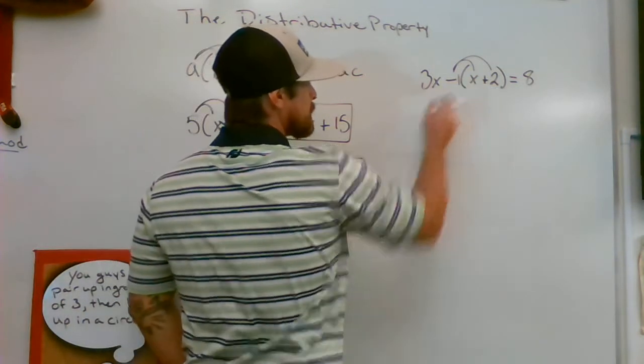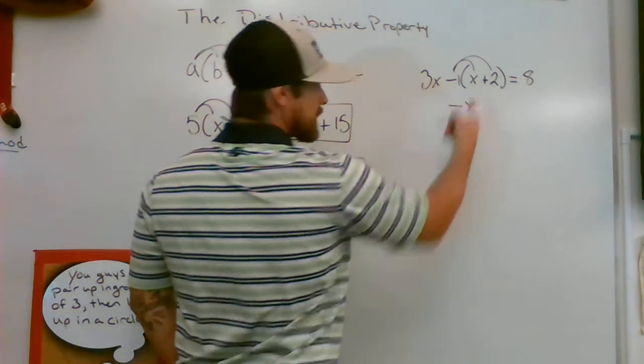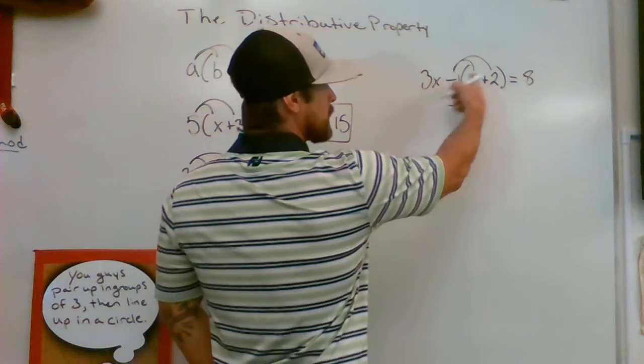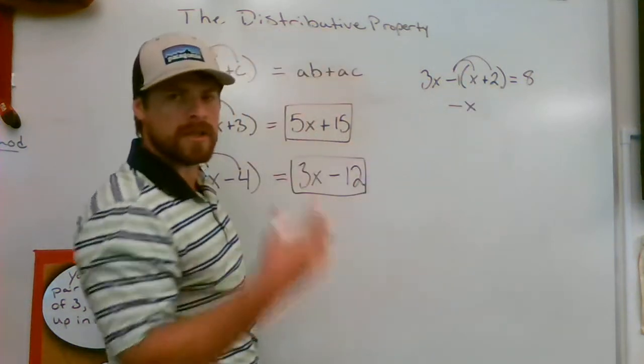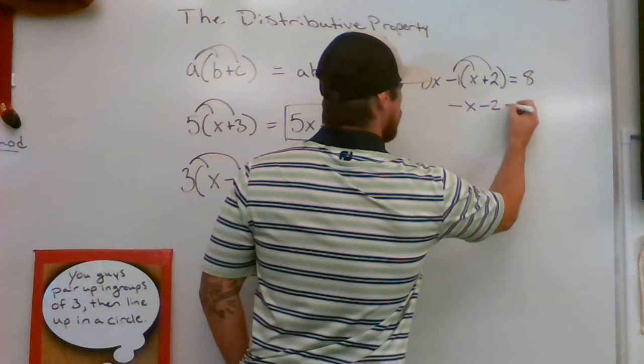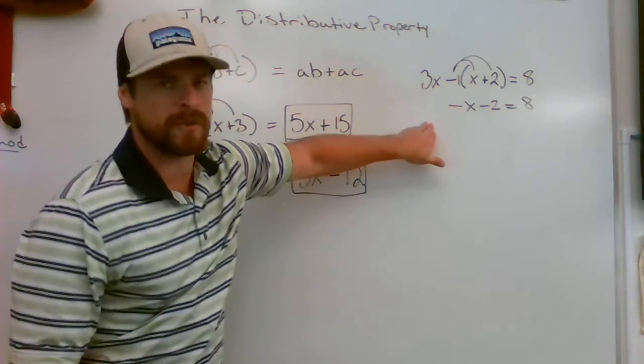So if I take negative 1 times x, I'm going to get a negative x as opposed to a positive x as you see on the inside. Okay, if I take a negative 1 times a positive 2, all it does is it turns that positive 2 into a negative 2. I still have the 8 and then I can't forget to bring down this 3x.